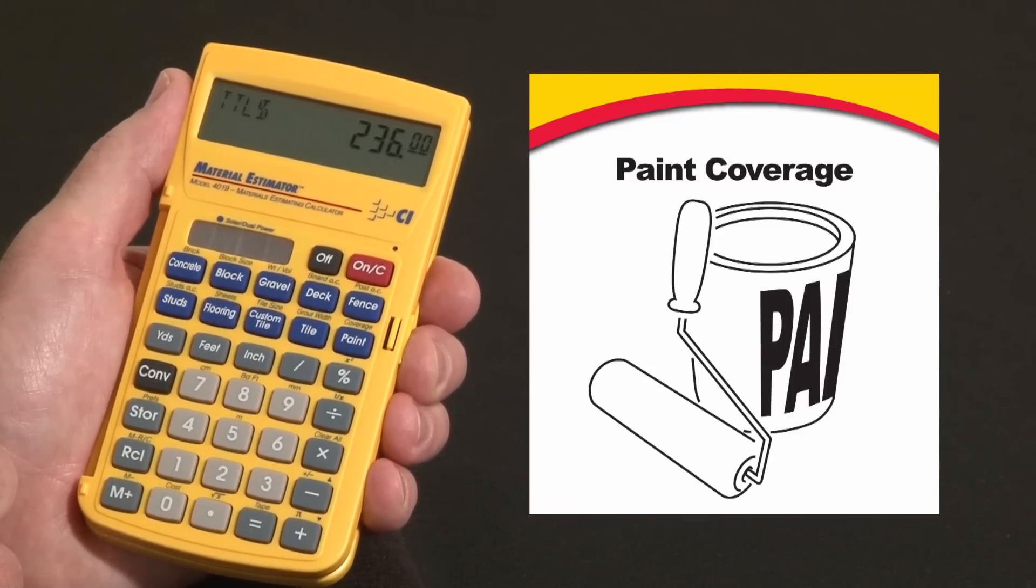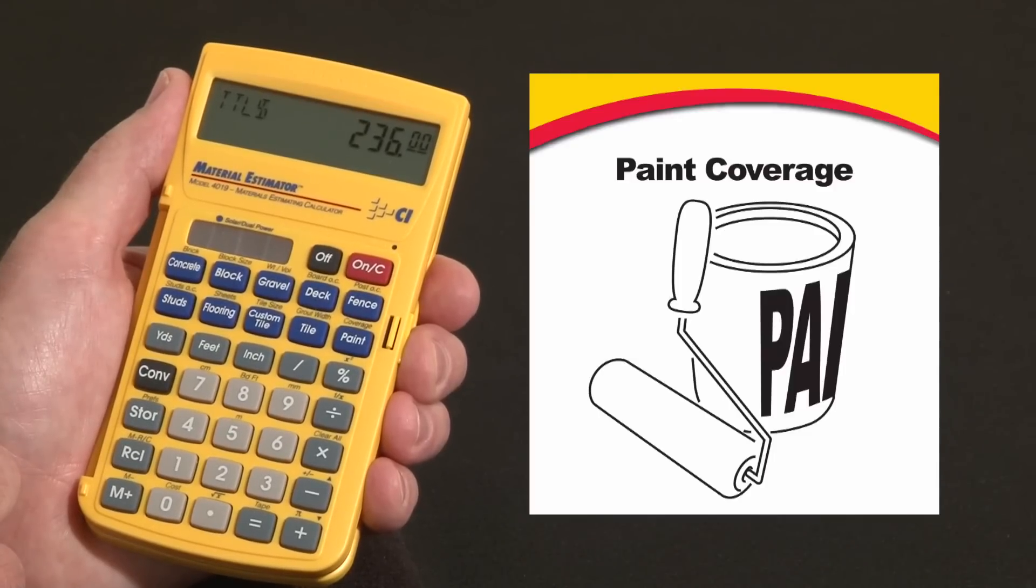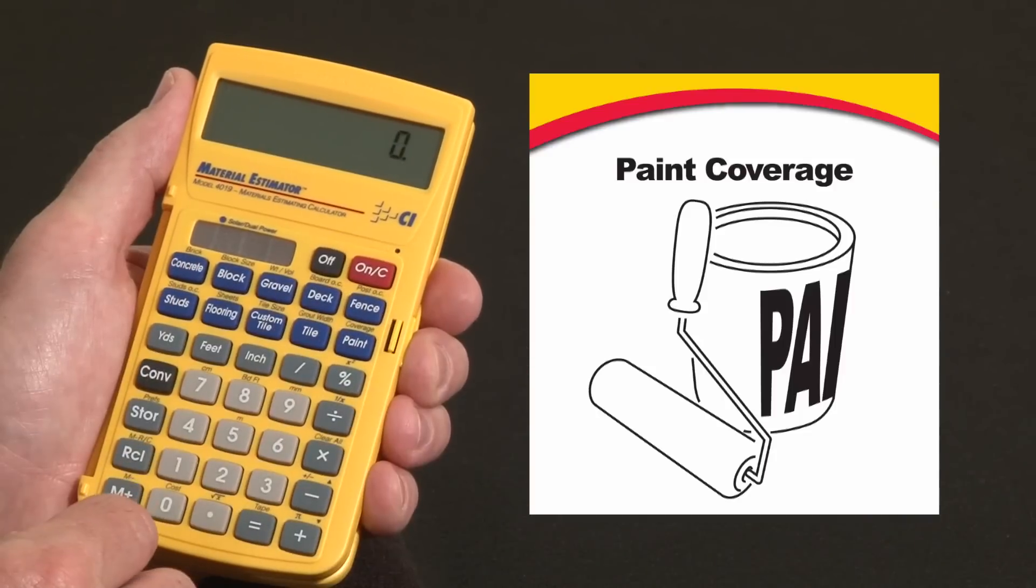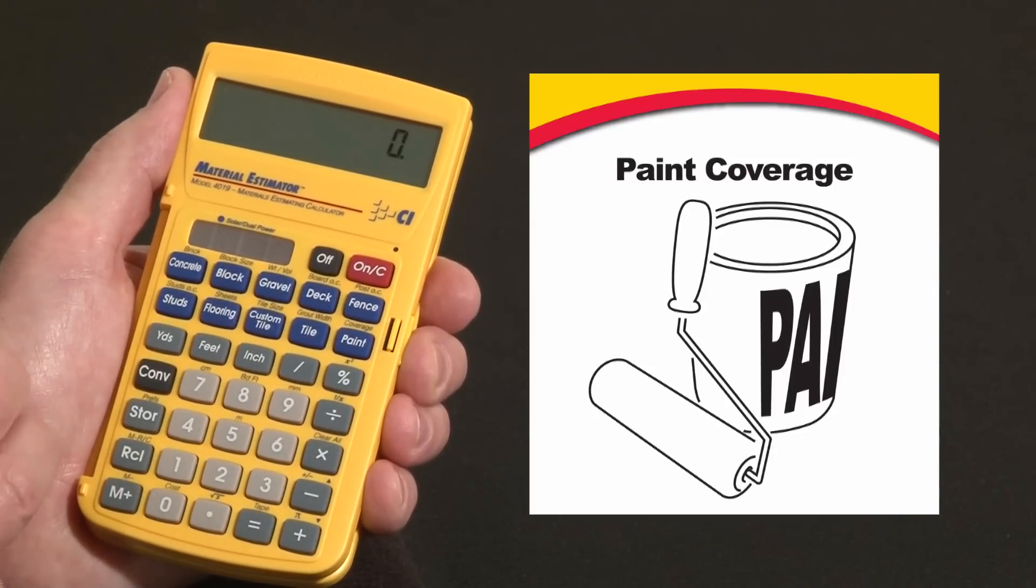Now sometimes you have some leftover paint in the bottom of the can, and you might wonder how far can you paint with this leftover amount. Let's go back to the default 350 square foot coverage rate.